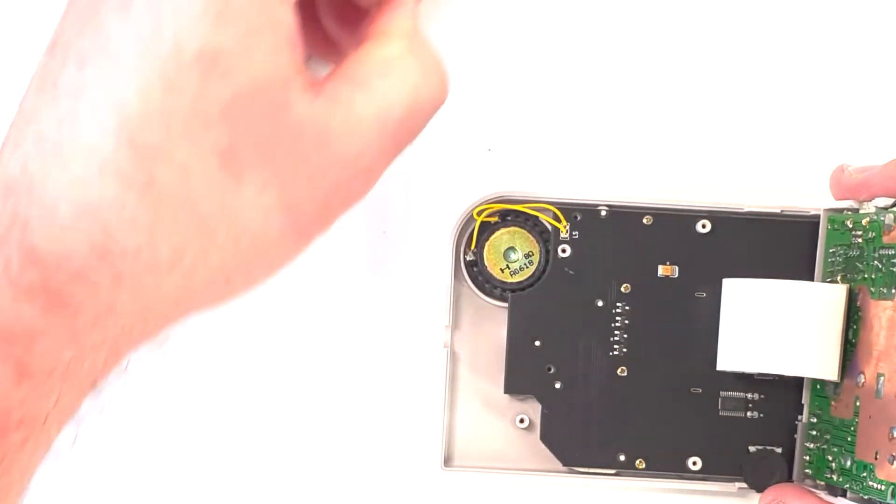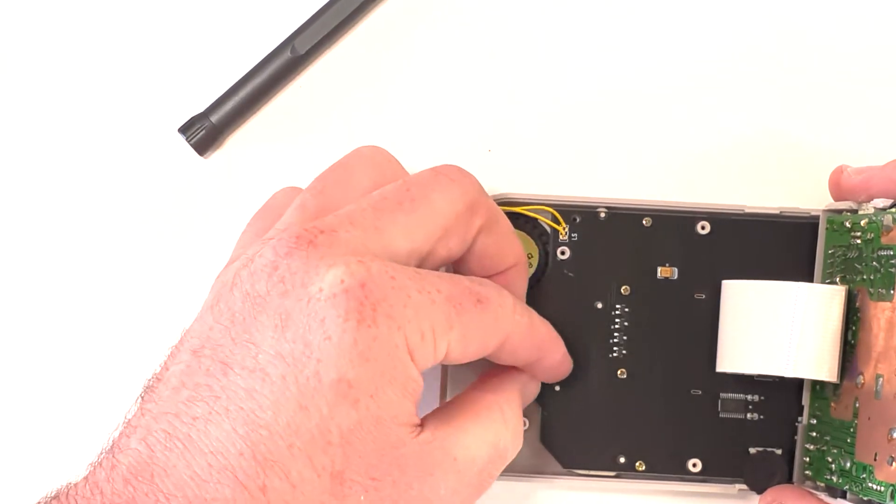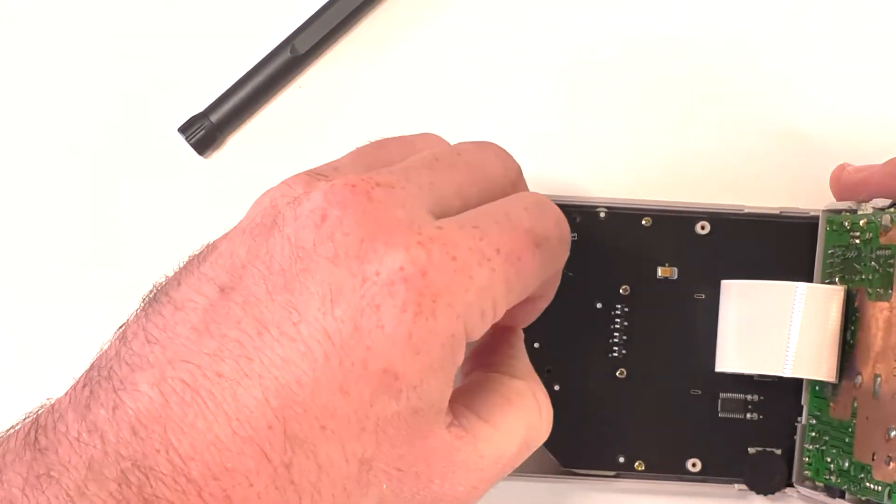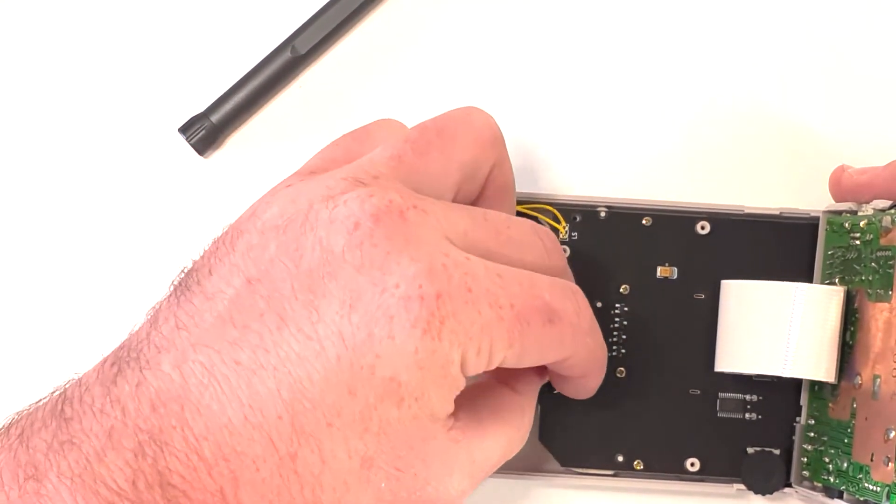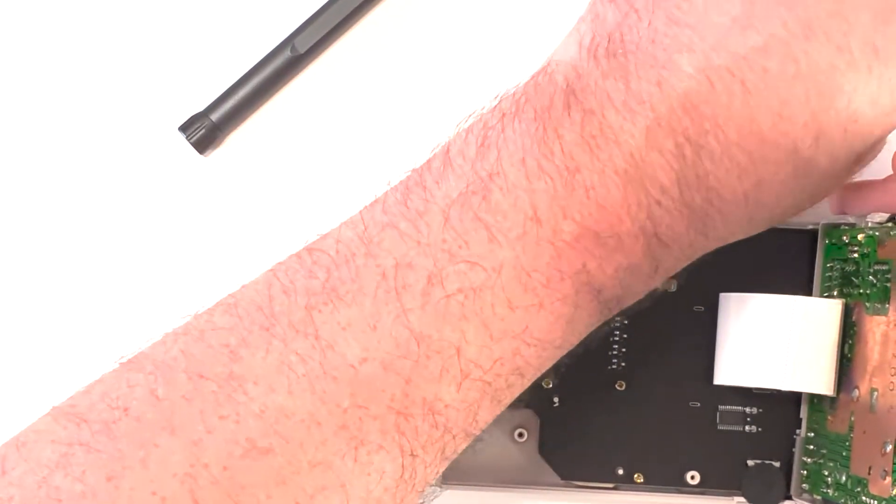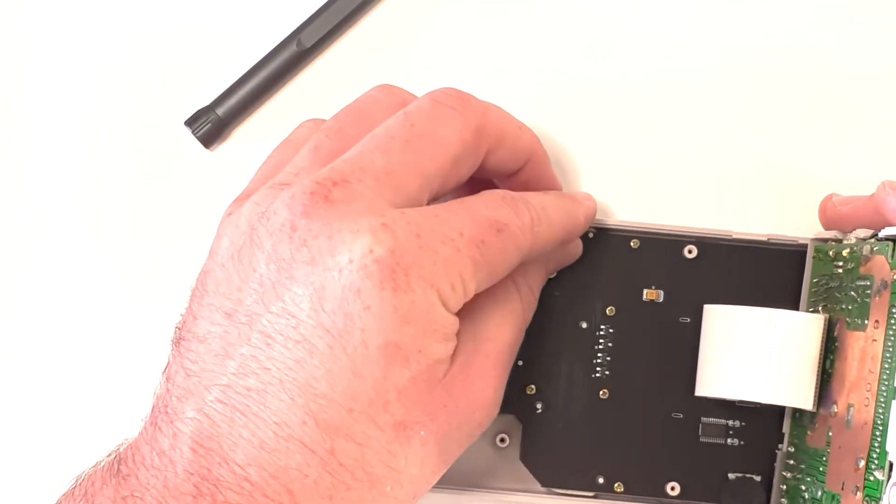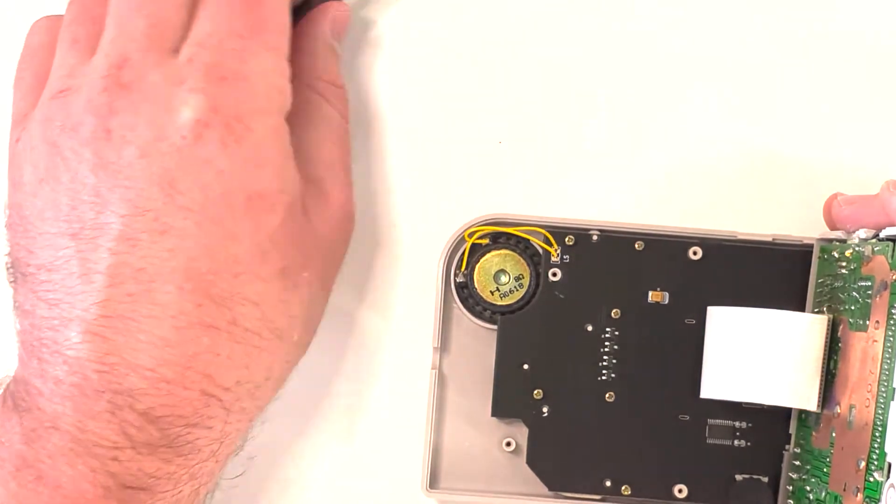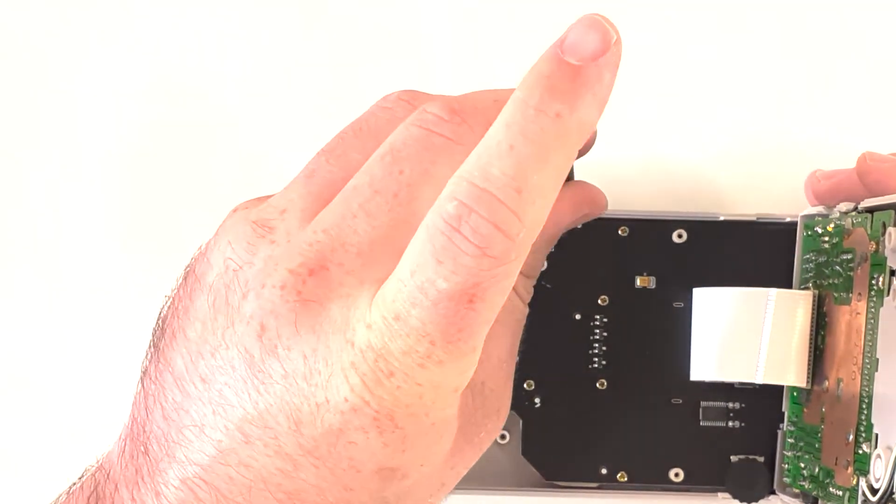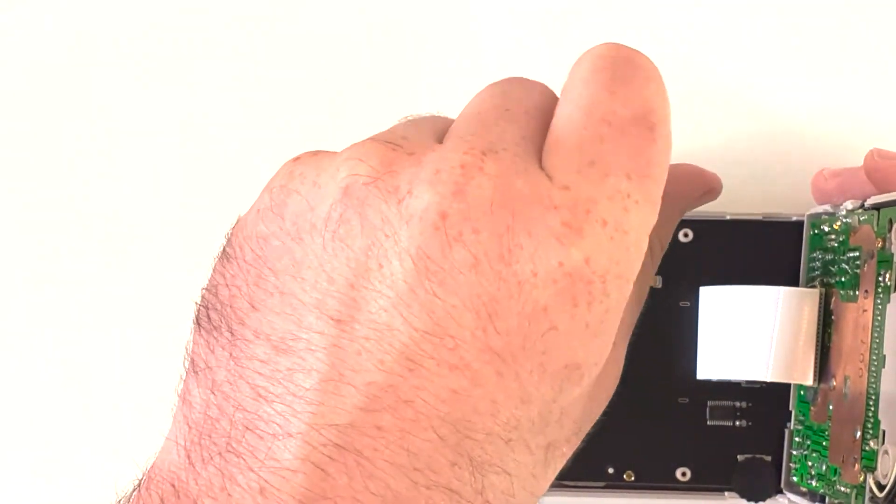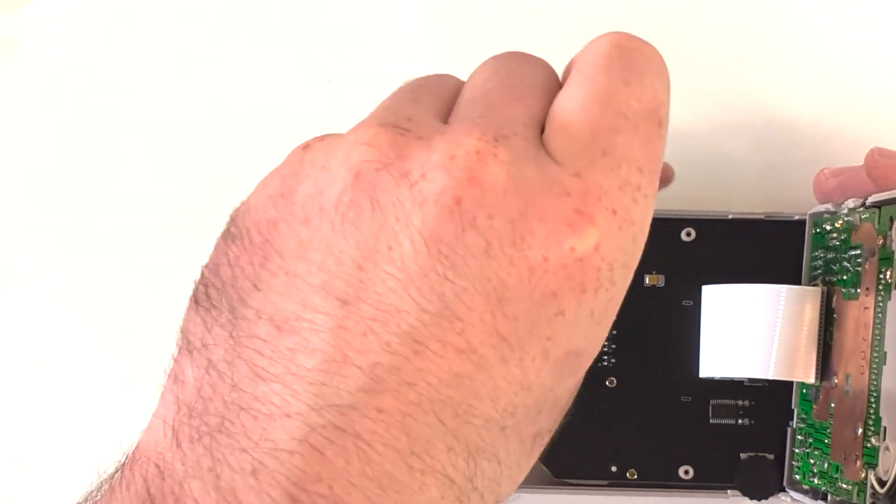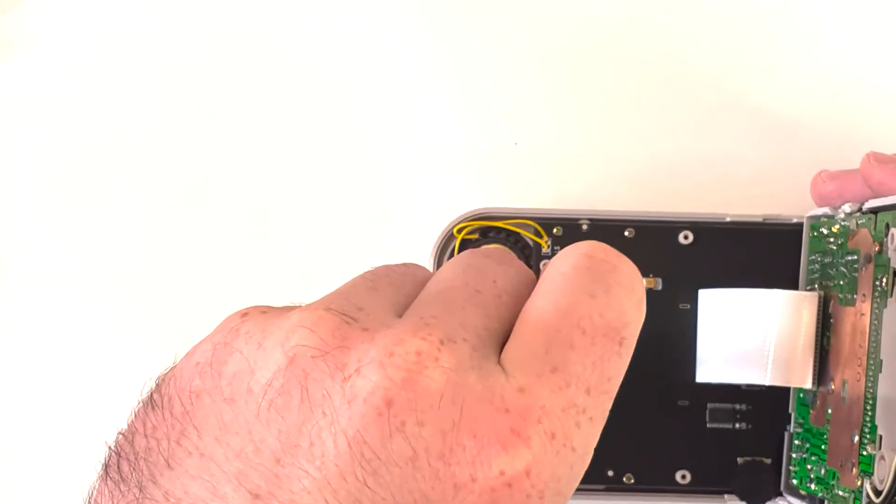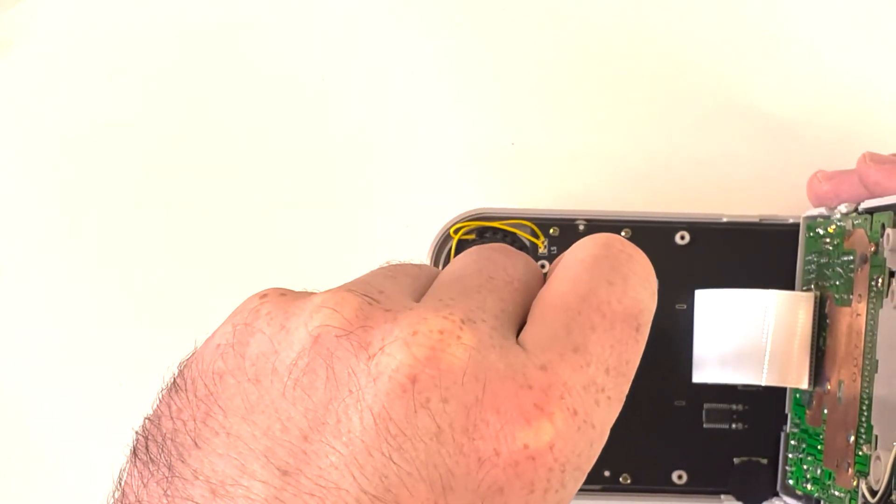But there's also a simulated color mode where the unit attempts to pick the colors that it would but it's not the same as a Game Boy Color. It's not processed in the same way, I don't think, by interpreting those grays. So if you would prefer a Game Boy Color experience, do the IPS mod to your Game Boy Color. It's an easy way to do it.